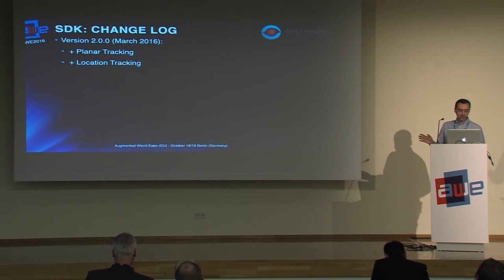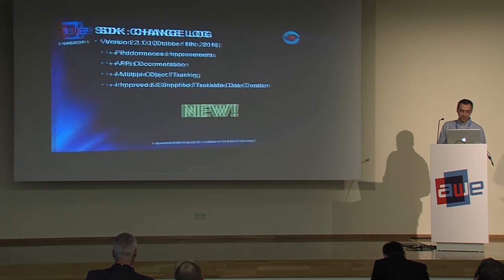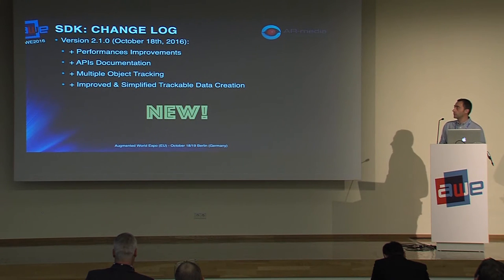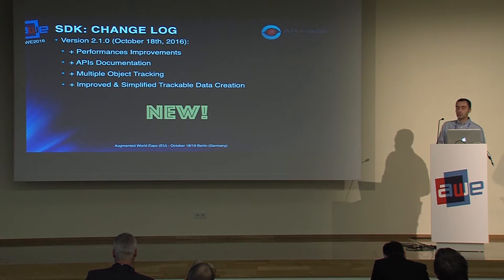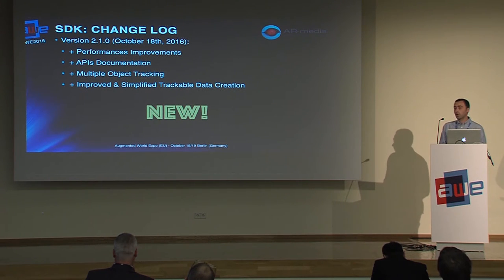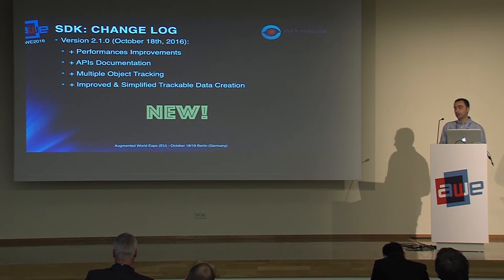The last version released in March this year added planar tracking and location tracking. And just today we released version 2.1.2.0 with a lot of performance improvements, a very complete API documentation for both Android and iOS, and most importantly, multiple object tracking — meaning you can recognize and track more than one object in the same application at the same time. We also improved and simplified the tracking data creation process.